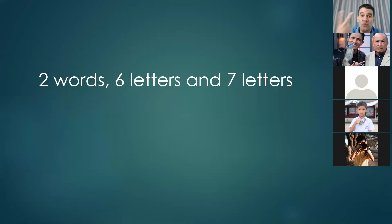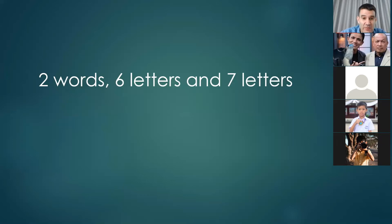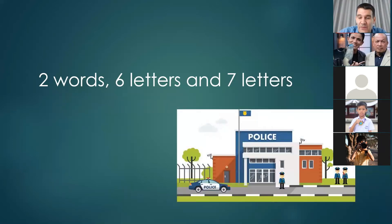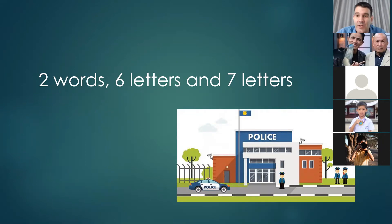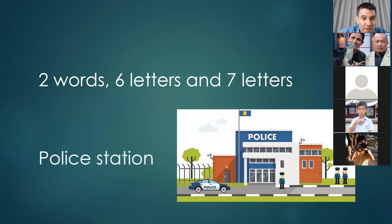The next one has two words — the first word has six letters, the second has seven letters, so it's a little bit more difficult. The first word is 'police' — you know the second word — it's 'station.' Police station, spelled P-O-L-I-C-E S-T-A-T-I-O-N.